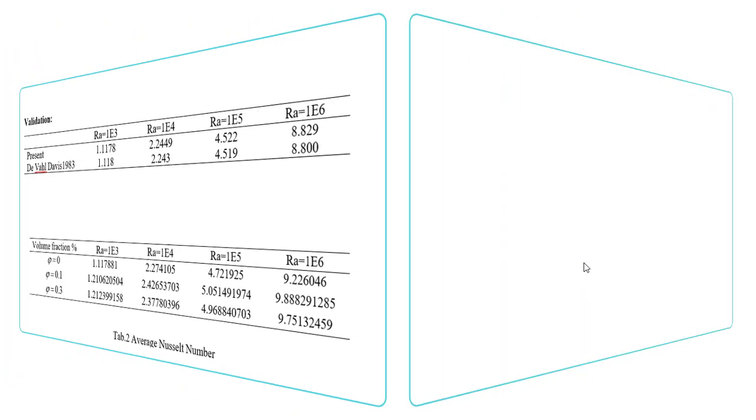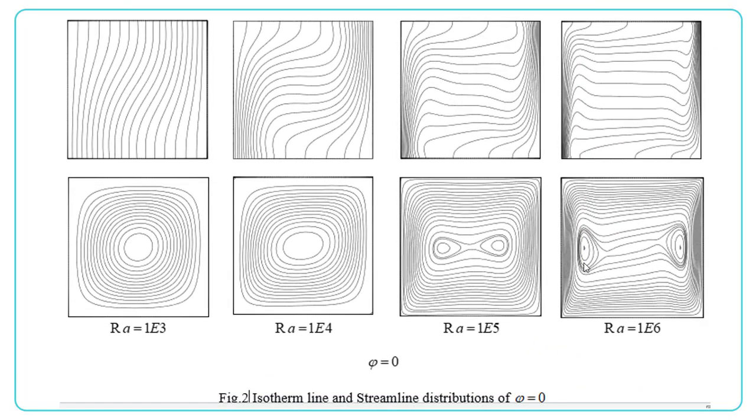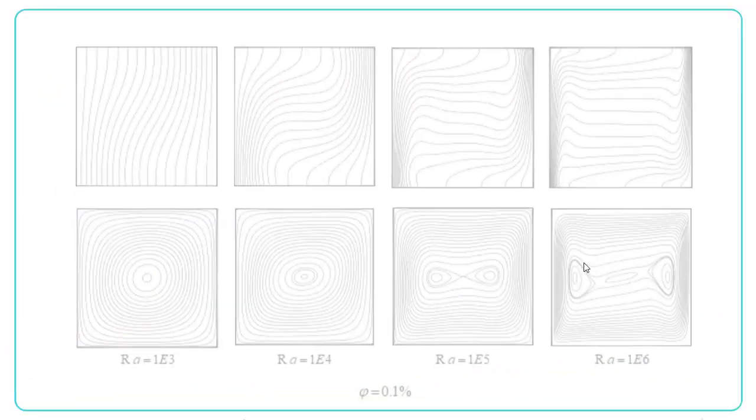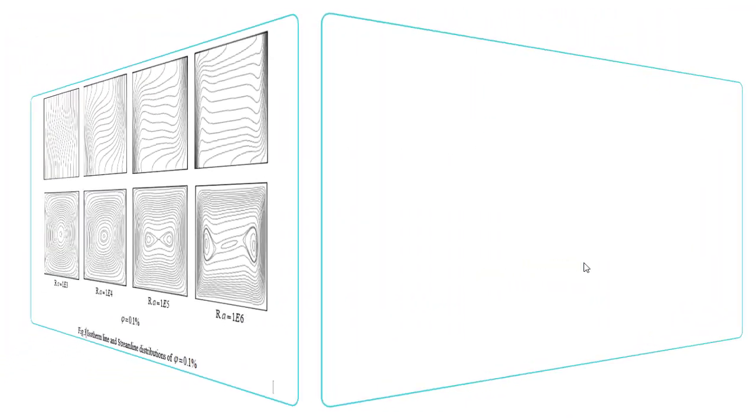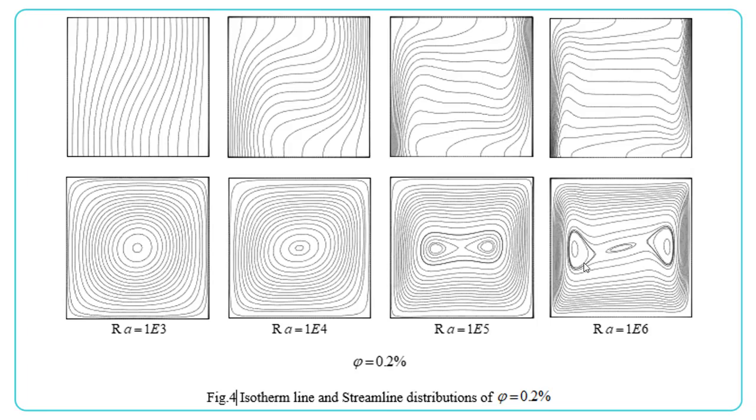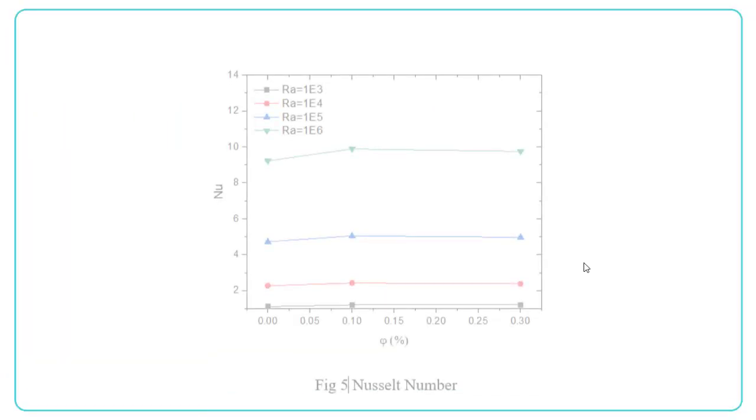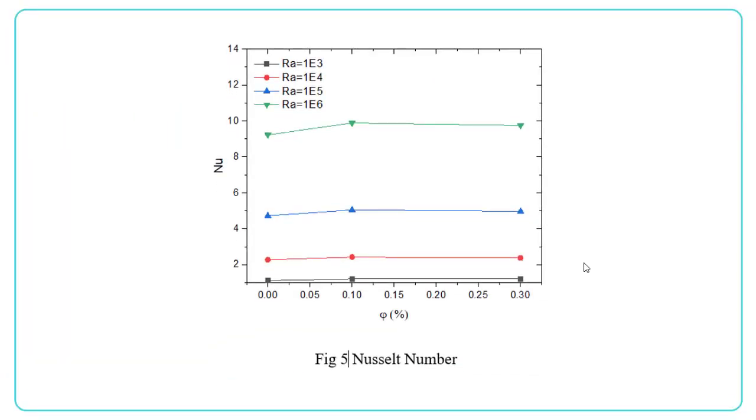Figures two, three, and four illustrate the isotherms and streamlines of the three volume fractions. As shown in figure five, the increased volume fraction of carbon nanotube induces enhancement in the Nusselt number. This trend is more pronounced as the Rayleigh number increases.